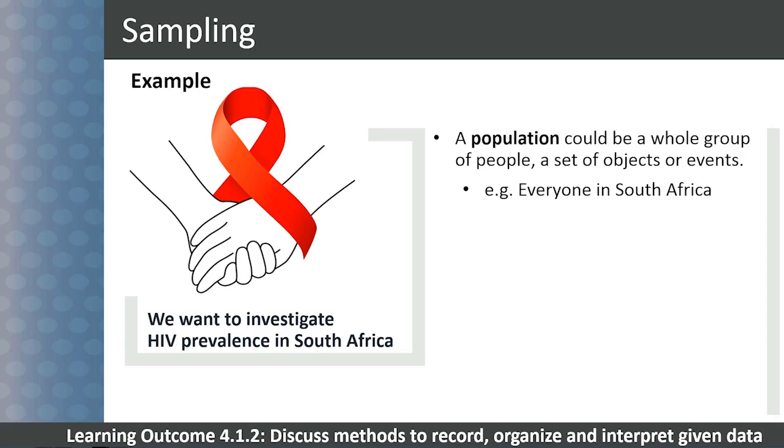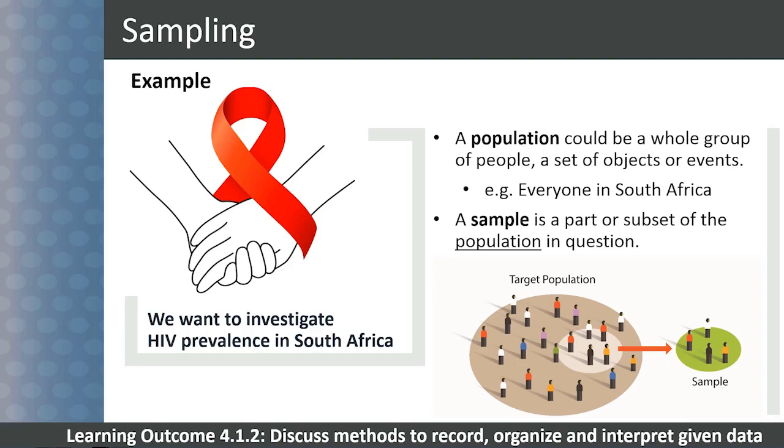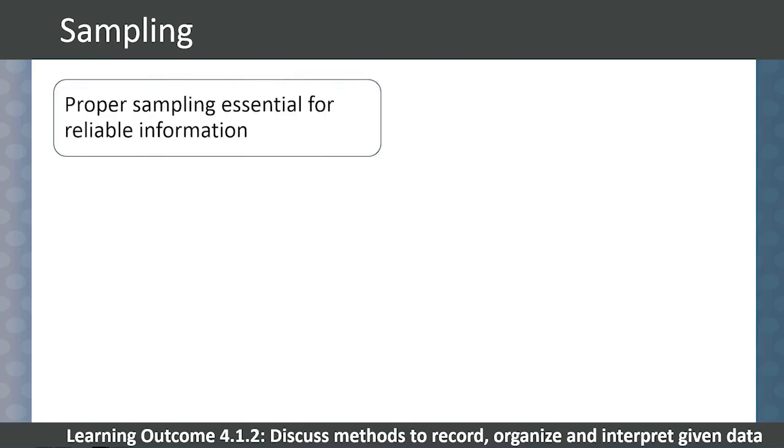Obviously, it would be impossible to survey or study every person in the country, so we need to use a representative sample. A sample is part or subset of the population in question. Sampling is a very important issue, and many statistical analyses cannot give reliable information because this step is not done properly.